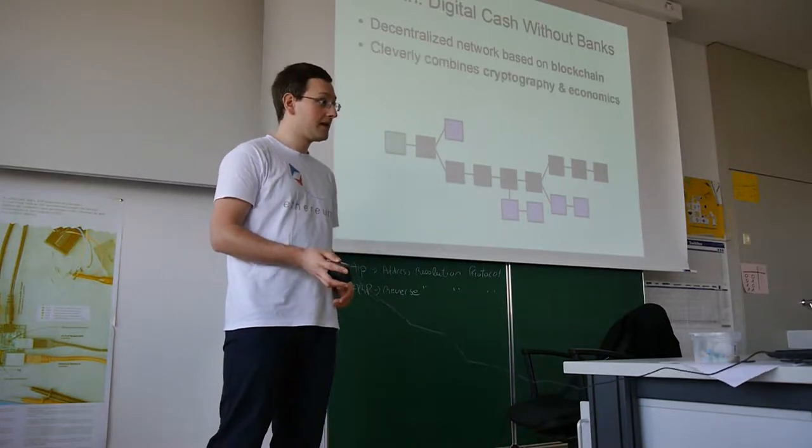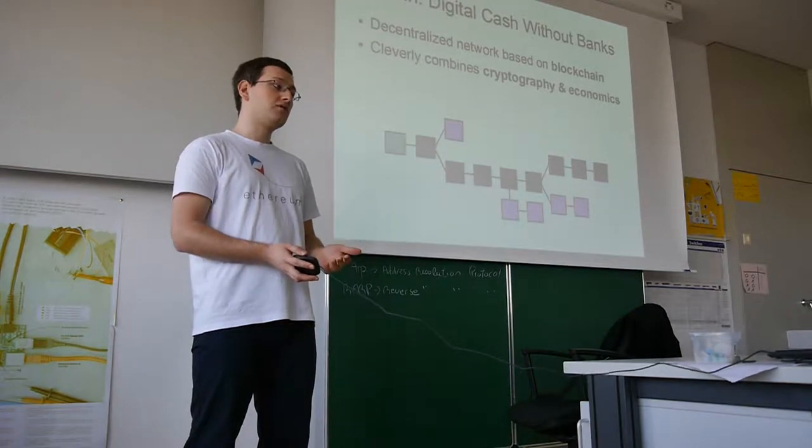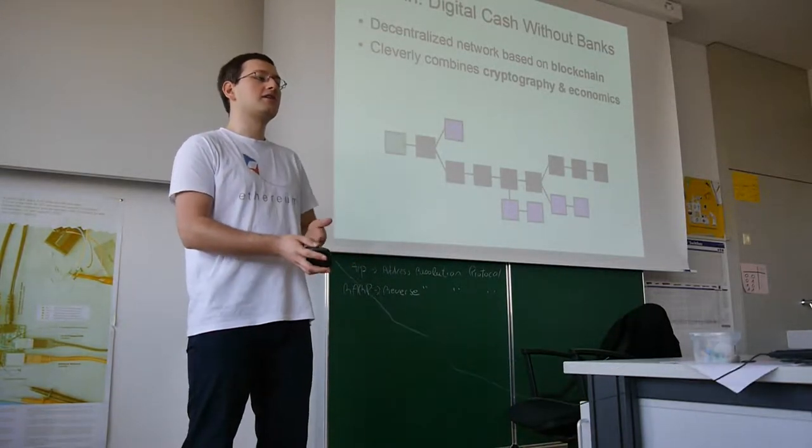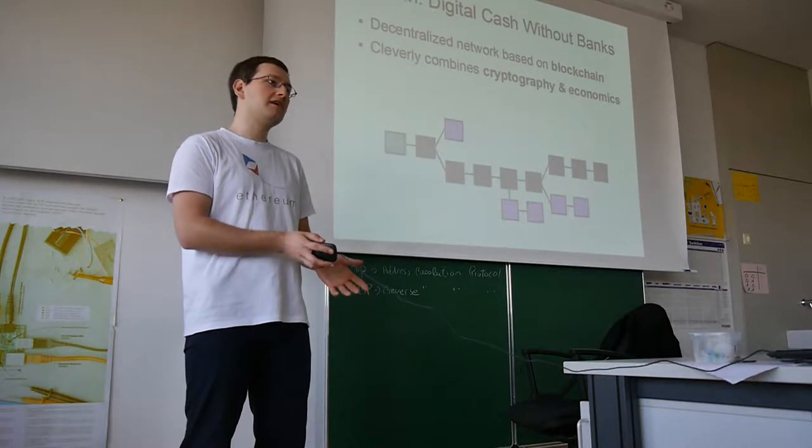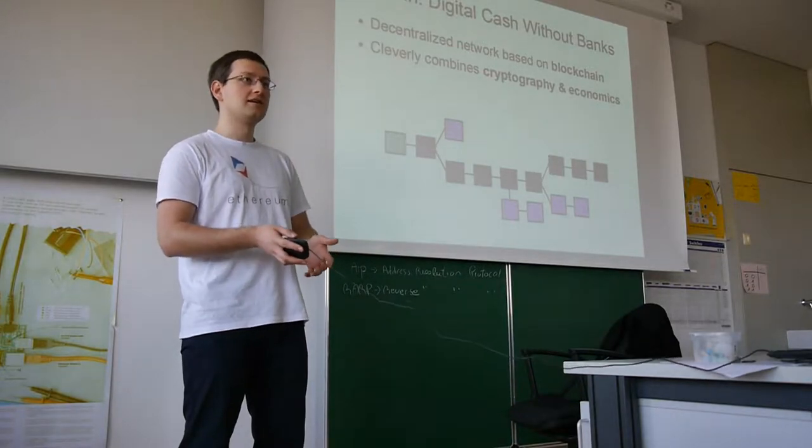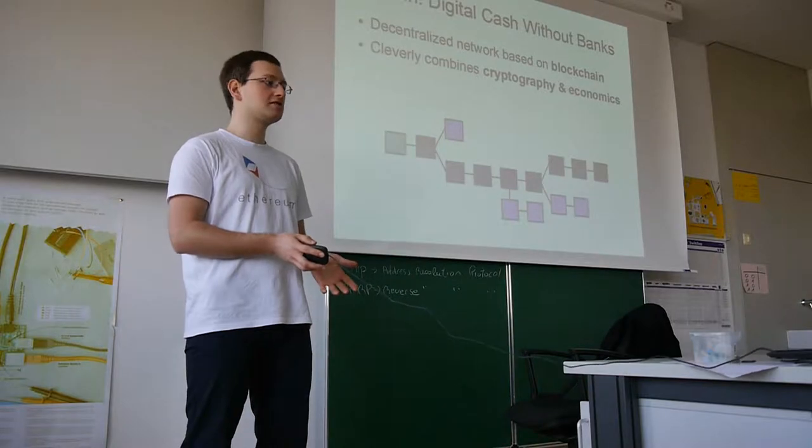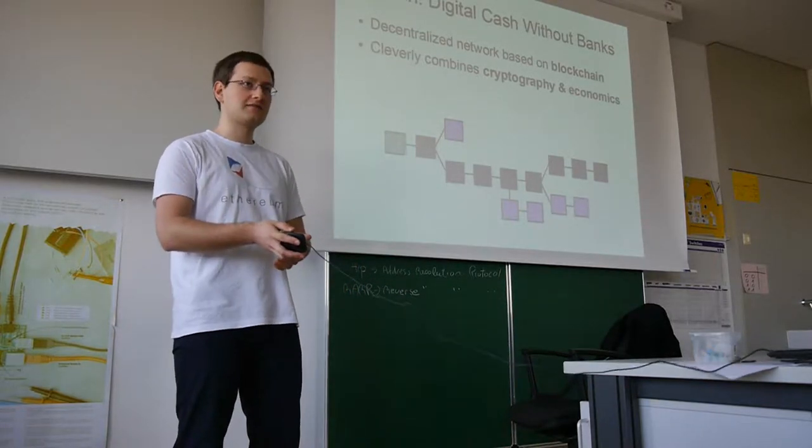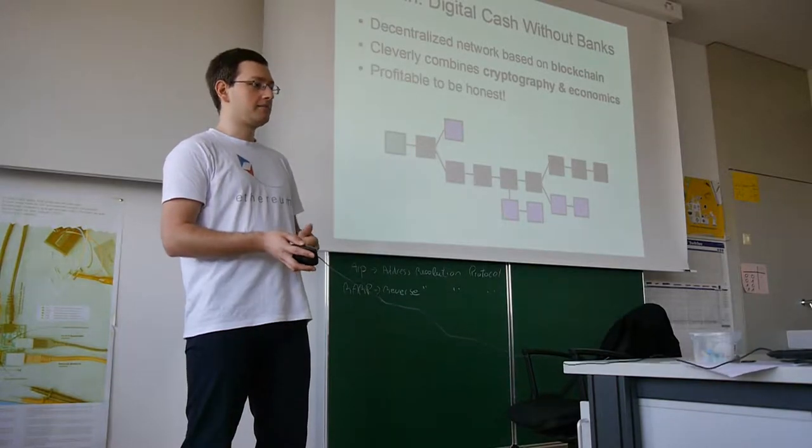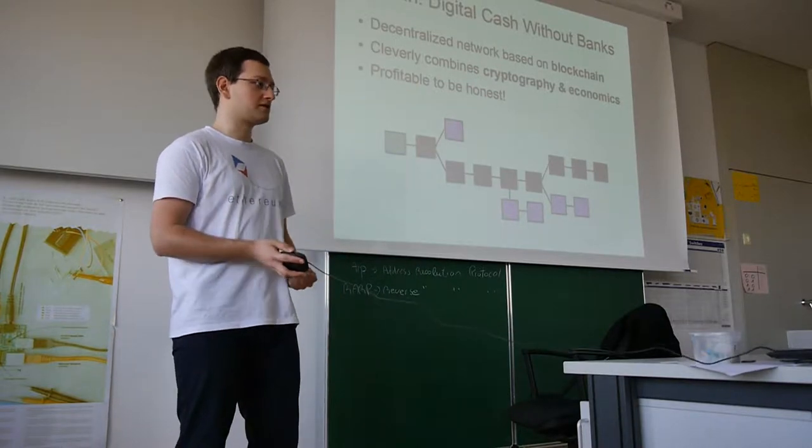The technology, the data structure that it is based on, is called the blockchain. So this is a picture of a blockchain. The main breakthrough was that the designer of that system cleverly combined cryptography and economics. It's not purely a technical solution, but a solution that combines cryptographic techniques, such as hash functions, digital signatures, with economic incentives, so that the players who play this game are more or less honest, because it is profitable for them to be honest.